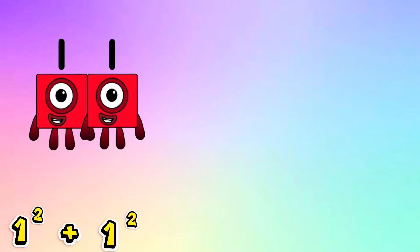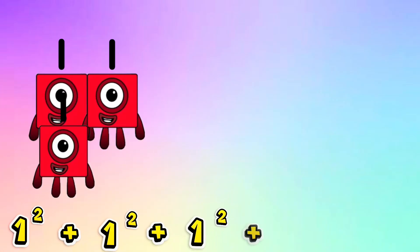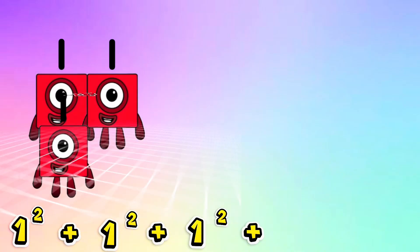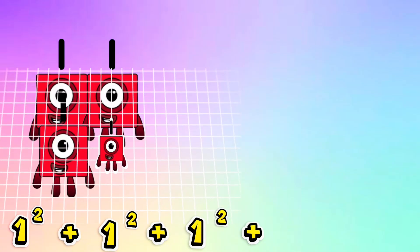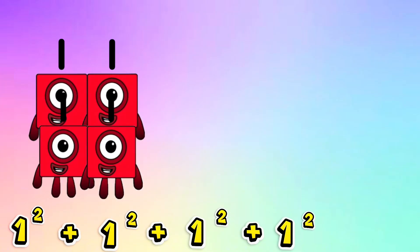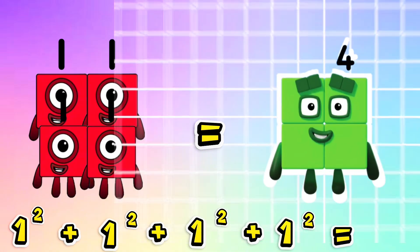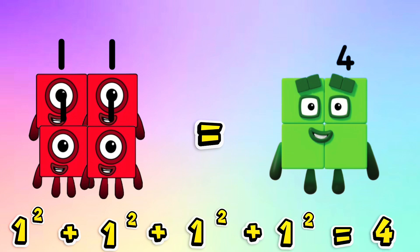1 squared plus 1 squared plus 1 squared plus 1 squared is equals to 4.